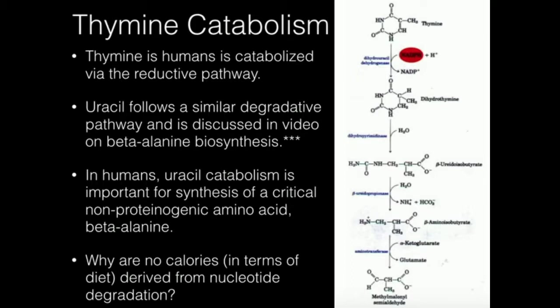Thymine initially is going to react with dihydrouracil dehydrogenase. Another name for this enzyme — because it does not just react with uracil — is dihydropyrimidine dehydrogenase. This double bond is going to get reduced. Dihydropyrimidinase is going to break open the remainder of the pyrimidine ring into this molecule called beta-ureidoisobutyrate. There's another enzyme, beta-ureidopropionase, that is going to use water to hydrolyze off both ammonia and bicarbonate.